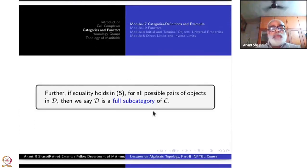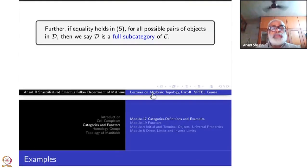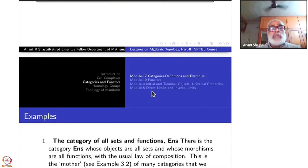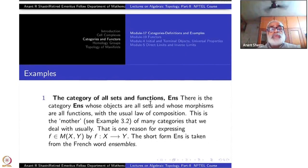Further, if M_D(A, B) equals M_C(A, B) for all pairs A, B whenever A and B are inside D, then we call D a full subcategory. We will see examples of this.